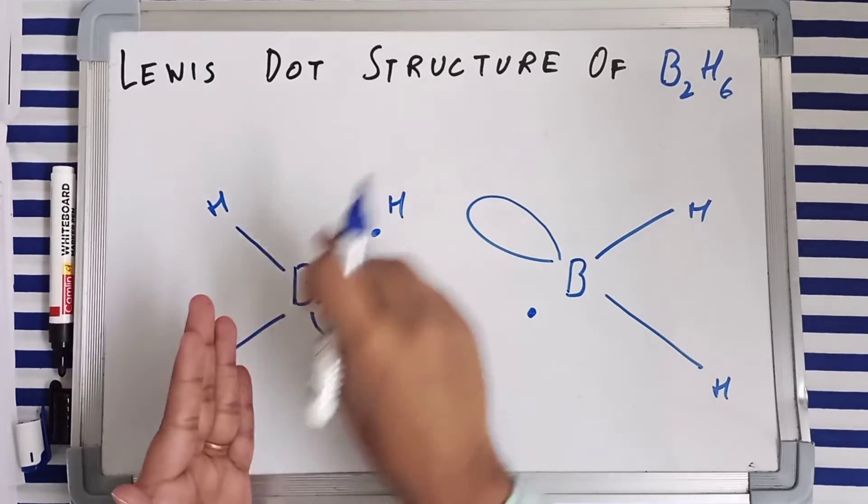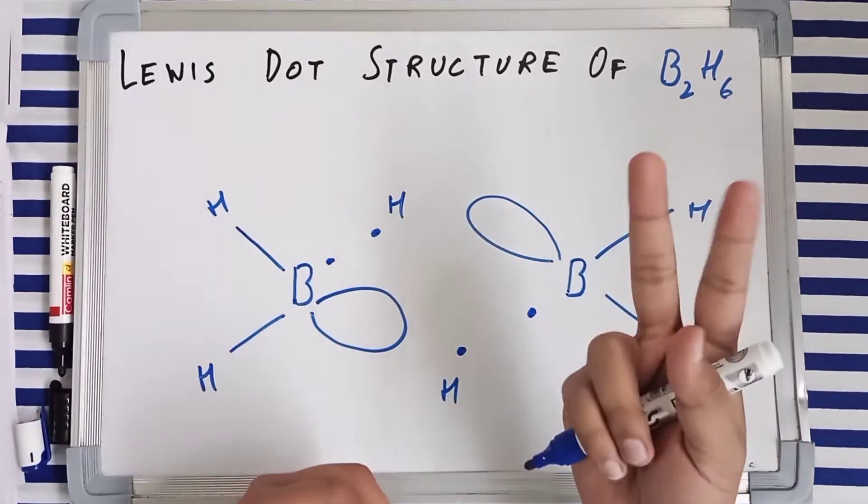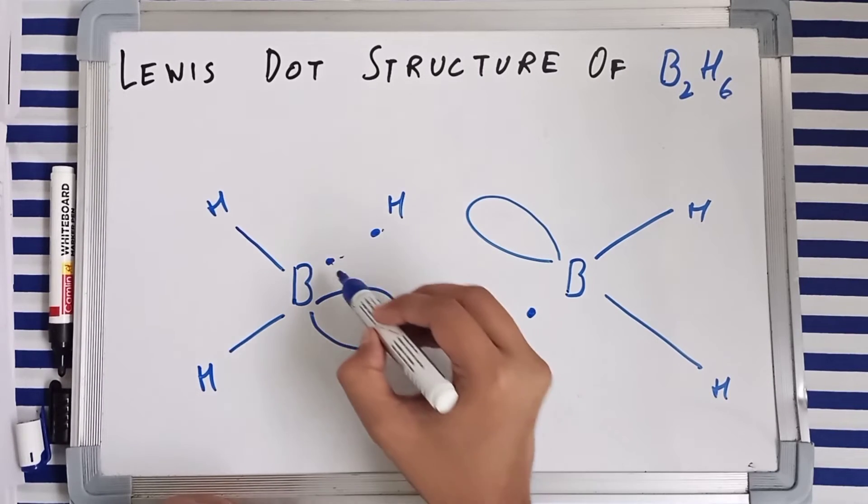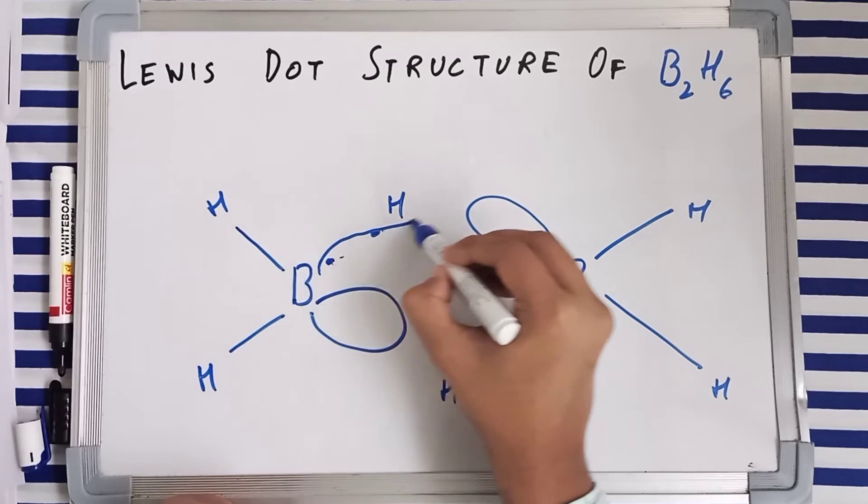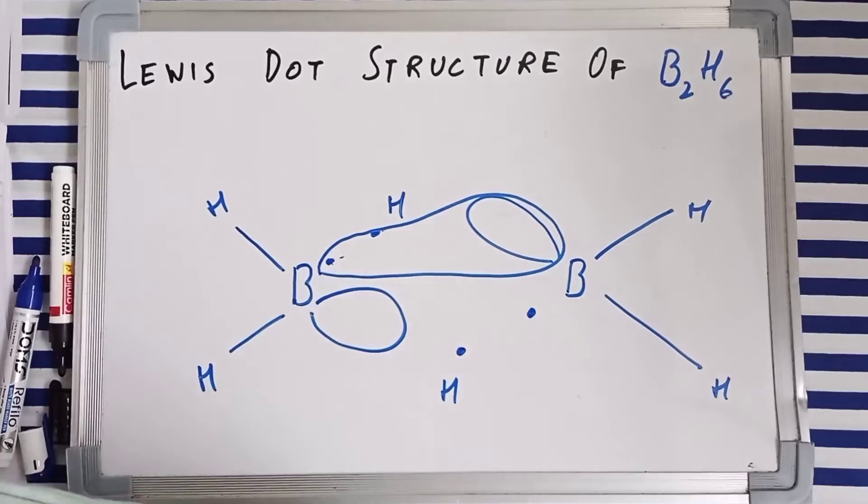This electron is from the left boron, the boron on the left side. So there is a formation of bond in which two, three centers and two electrons are involved. How? Let's see.